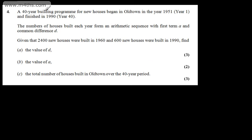This is question number four. We're told a 40-year building program for new houses began in Old Town in the year 1951, which was year one, and finished in 1990, which was year 40. The number of houses built each year form an arithmetic sequence with first term A and common difference D. Given that 2,400 new houses were built in 1960 and 600 new houses were built in 1990.